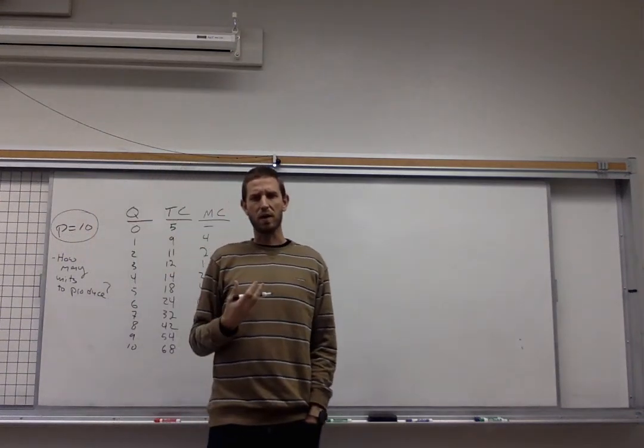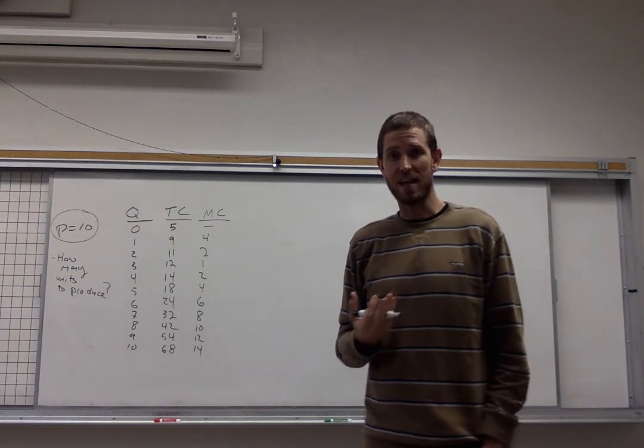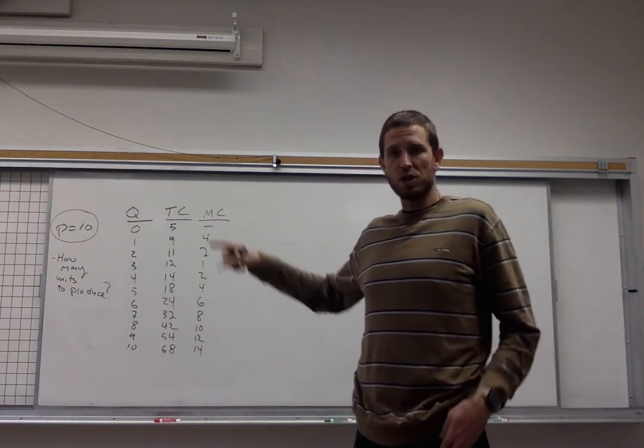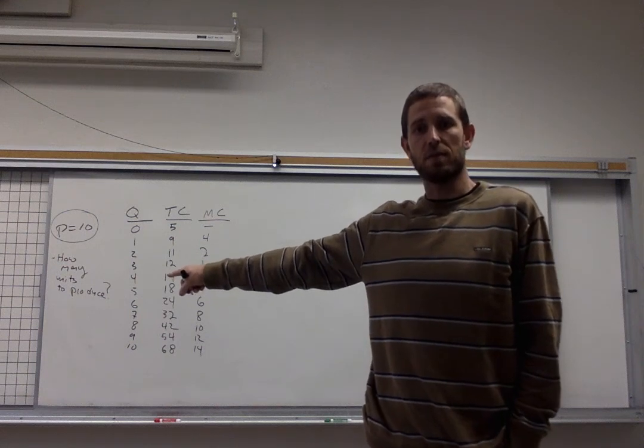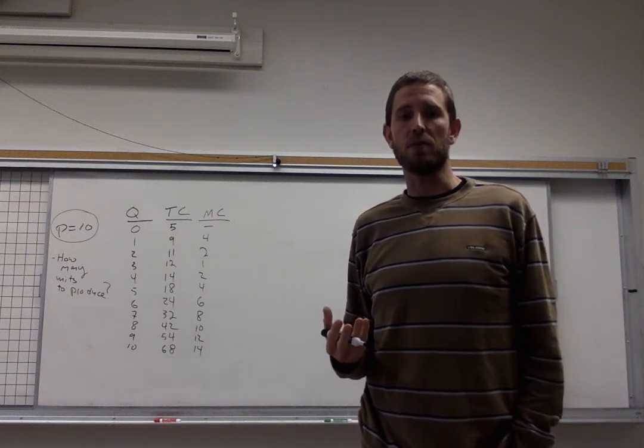That'll be given to you in any sort of setup that you encounter with these types of problems. So the price is ten. The table here represents the firm's cost. The question is which quantity should this firm elect to produce in order to get the highest possible amount of profit.